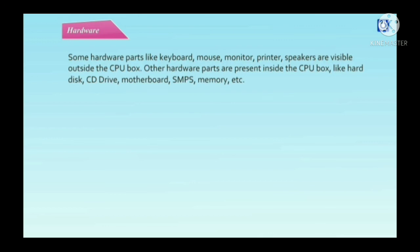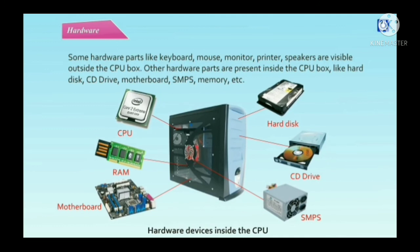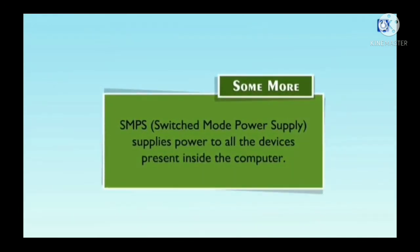Other hardware parts are present inside the CPU box like hard disk, CD drive, motherboard, SMPS, memory, etc. Hardware devices inside the CPU include hard disk, RAM, CD drive, SMPS, and motherboard. SMPS stands for Switched Mode Power Supply — it supplies power to all the devices present inside the computer.